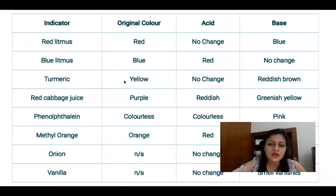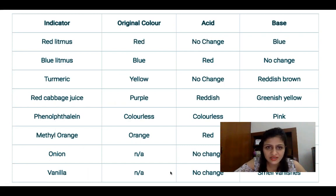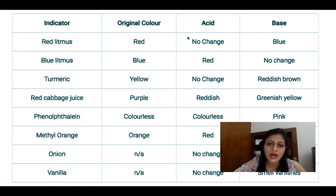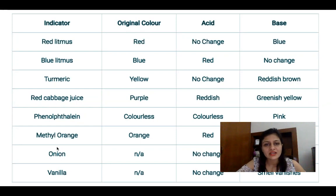I have made a combined table with indicators listed in the first column, their original color in the second column, the color change with acid in the third column, and the result with base in the fourth column. Kindly go through this table — you can take a screenshot or note it down. These indicators are useful in everyday life, not just for exams.